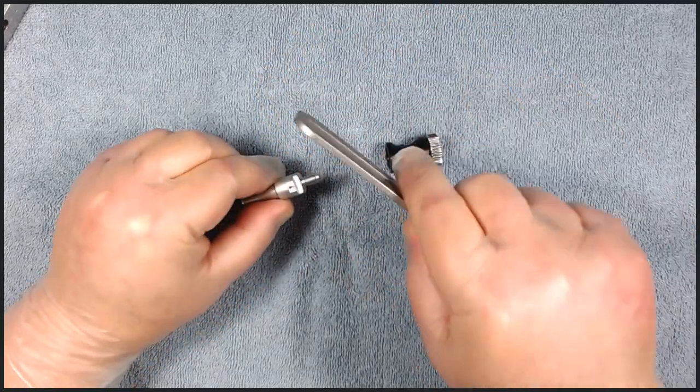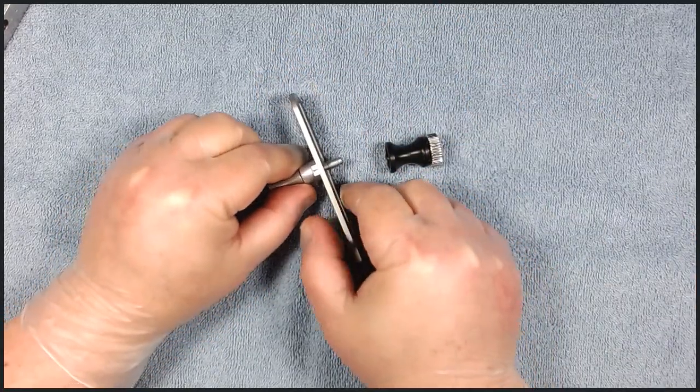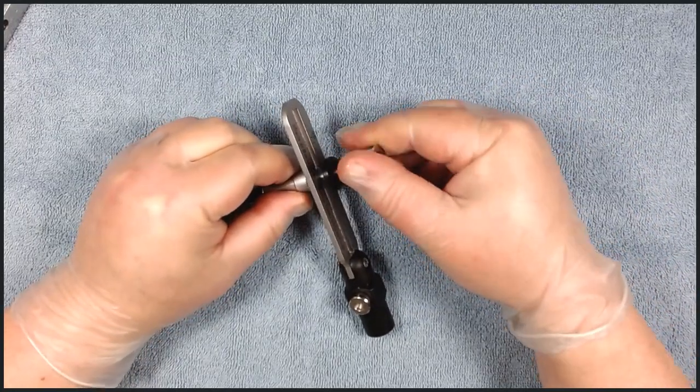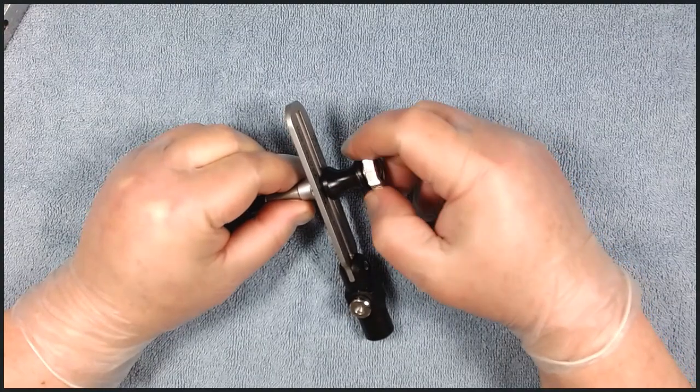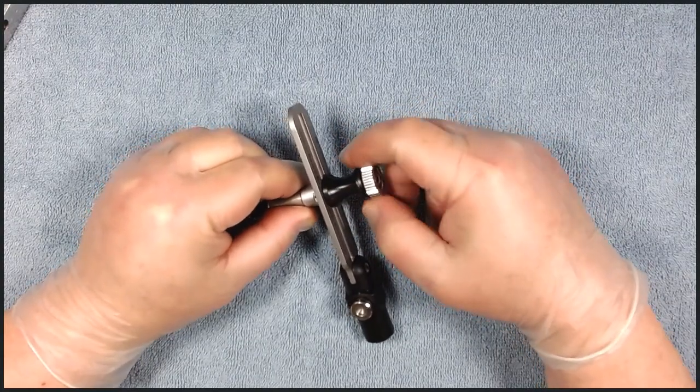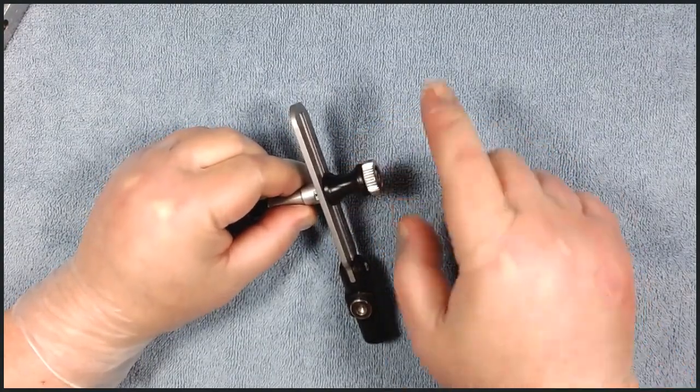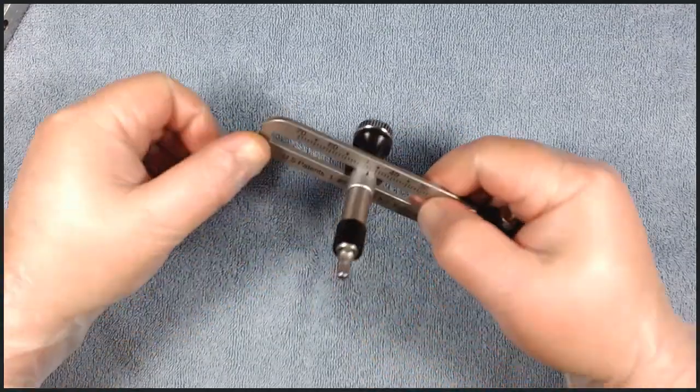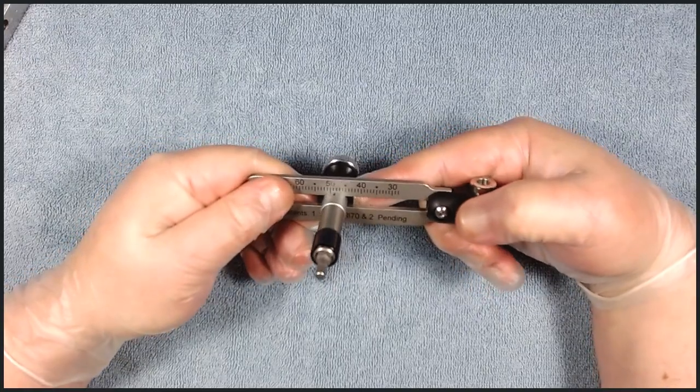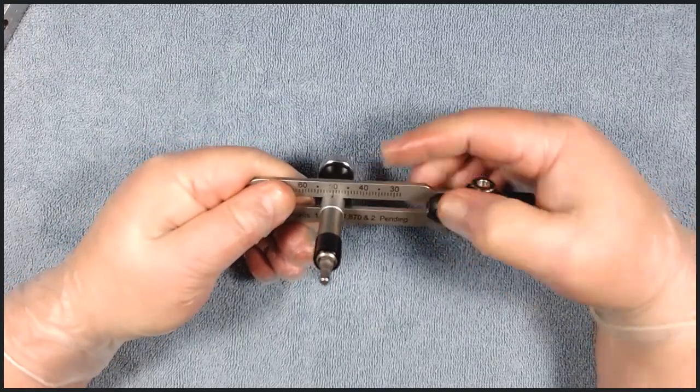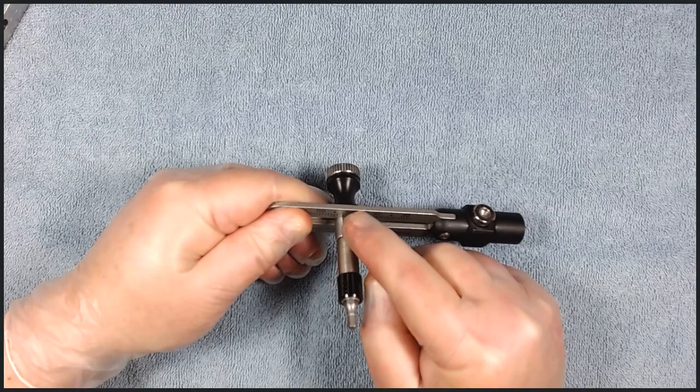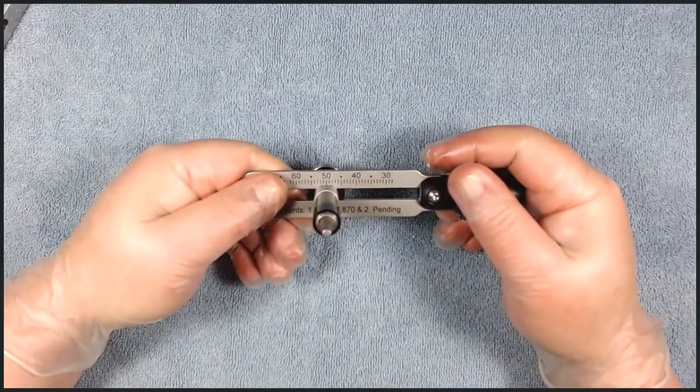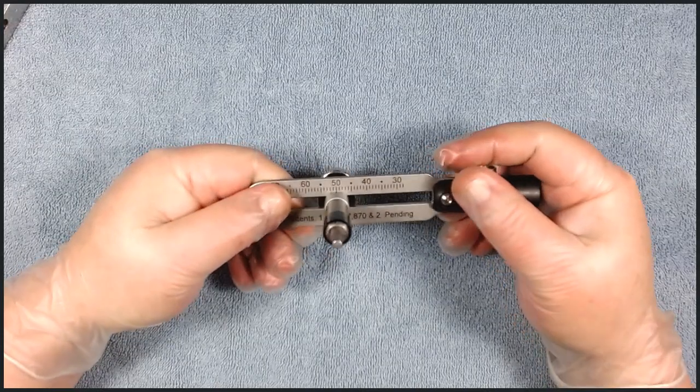So, unscrew the knob, flip the torque driver over. Twist the knob back on. Again, anywhere, because you can always move it until the knob just stops. And then move your arrow against the line with 50 inch pound torque marking.